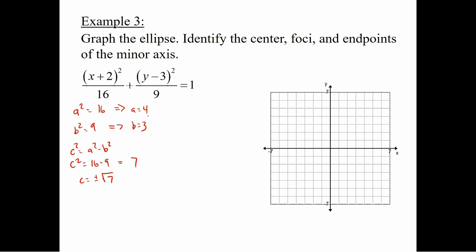Now, if we didn't have the +2 and −3, we would still have all this same information — none of that changed. The only thing that changes is that (h,k), the center, is now (−2, 3). So we're going to graph the center at x = −2, y = 3. There's our center.